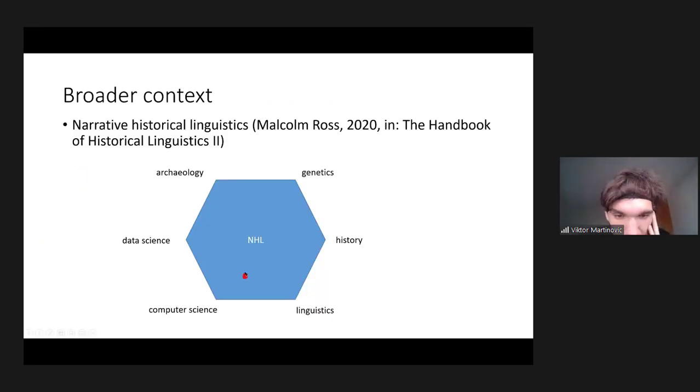And what I wanted to say is I put a little red dot here. This is how intuitively I would locate in this hexagon my own research here, because it's somewhere between linguistics and computer science and data science, and it tilts less towards history. But I would say most of the approaches of computational historical linguistics tilt more towards data science and computer science. There are not so many linguists who work on these computational models.